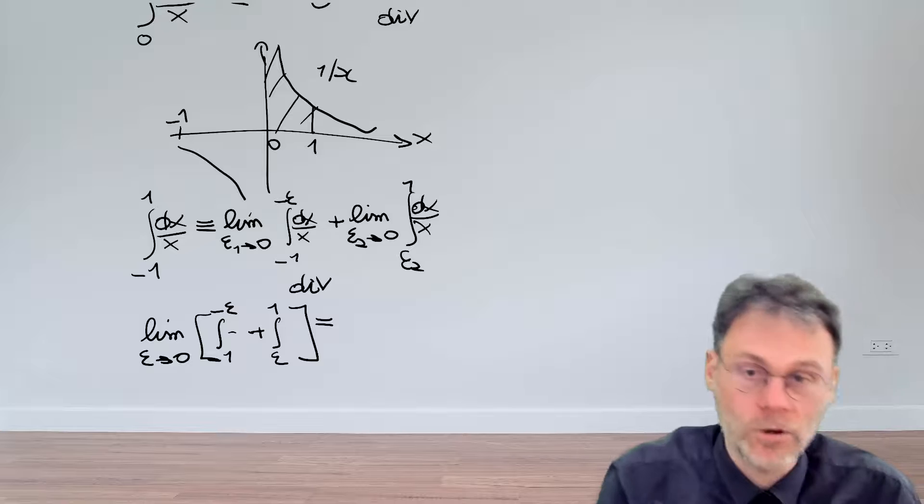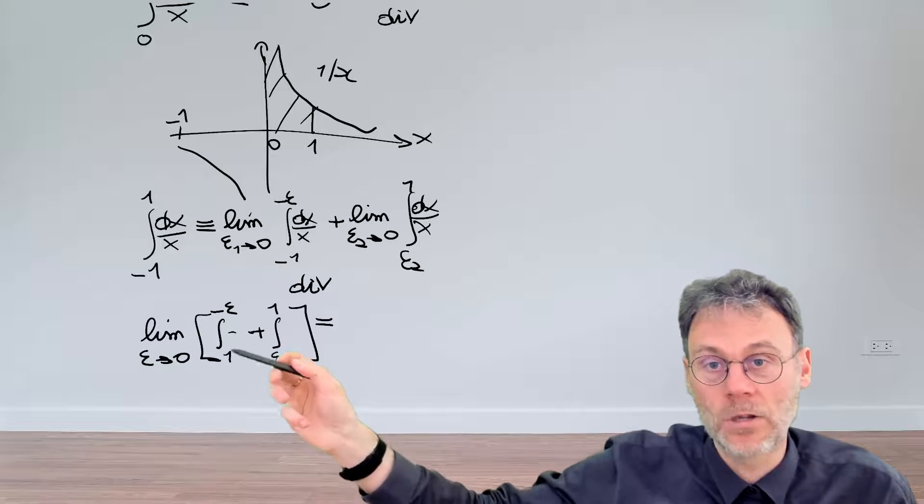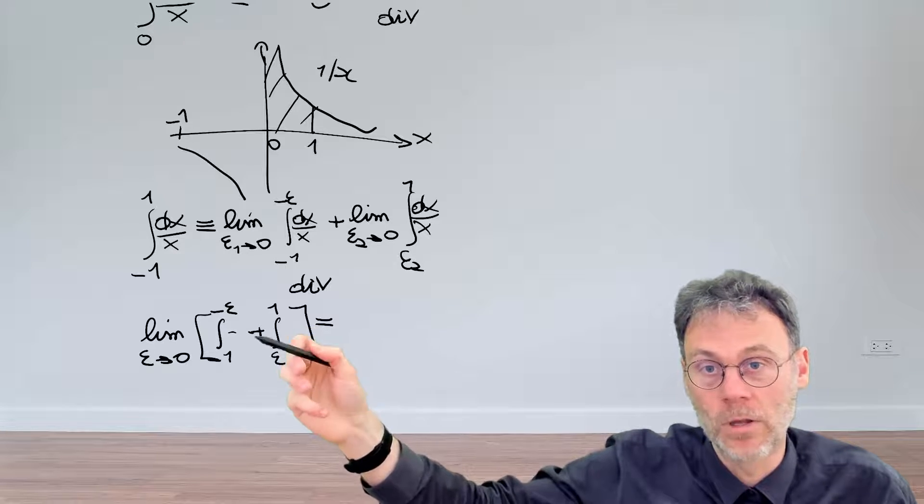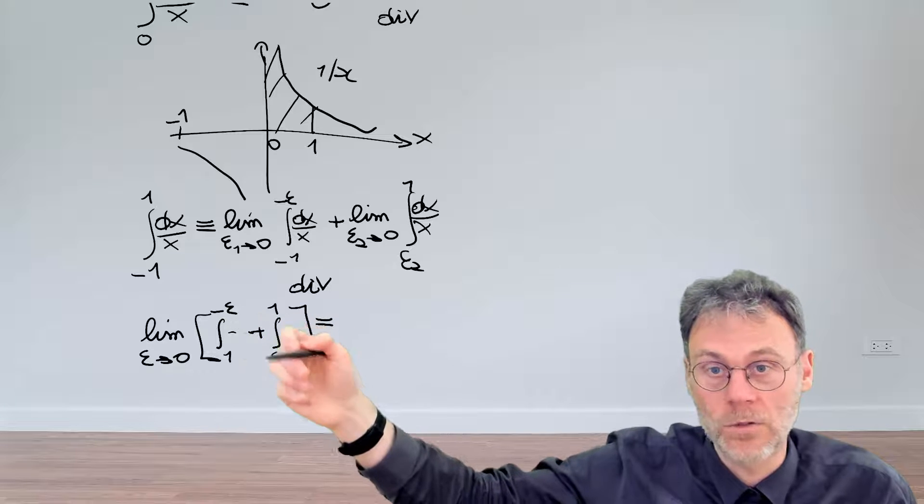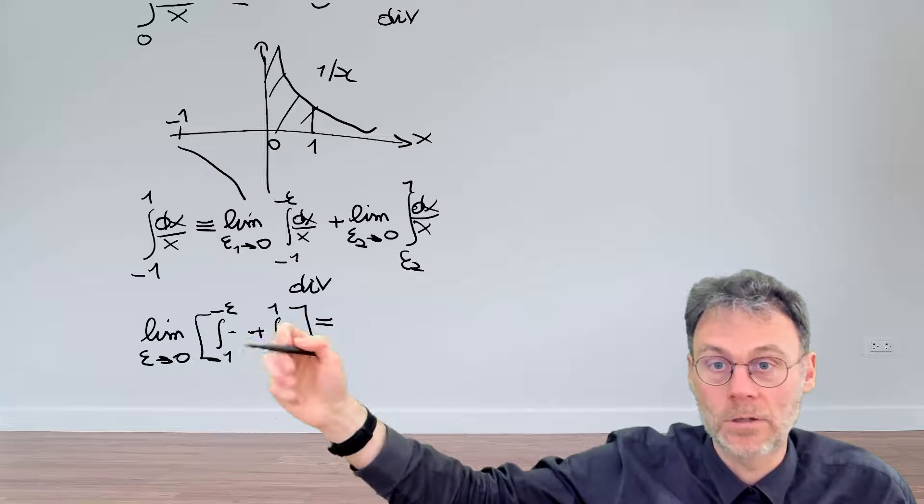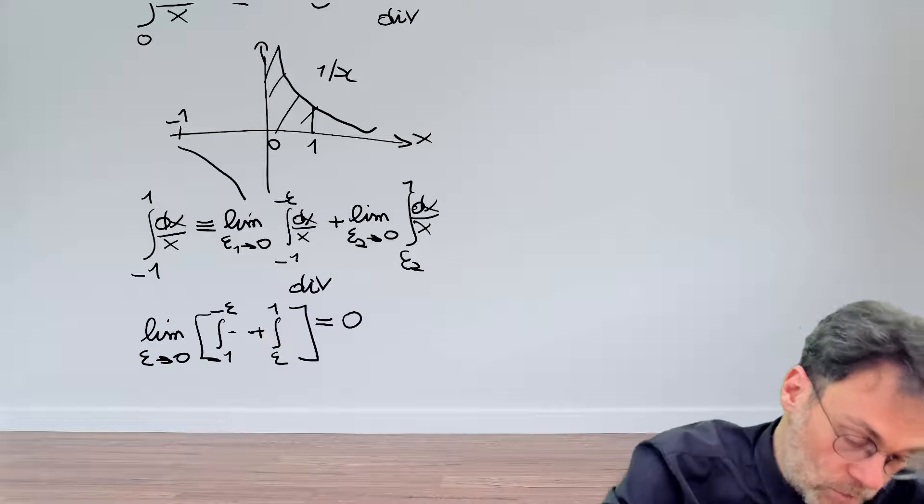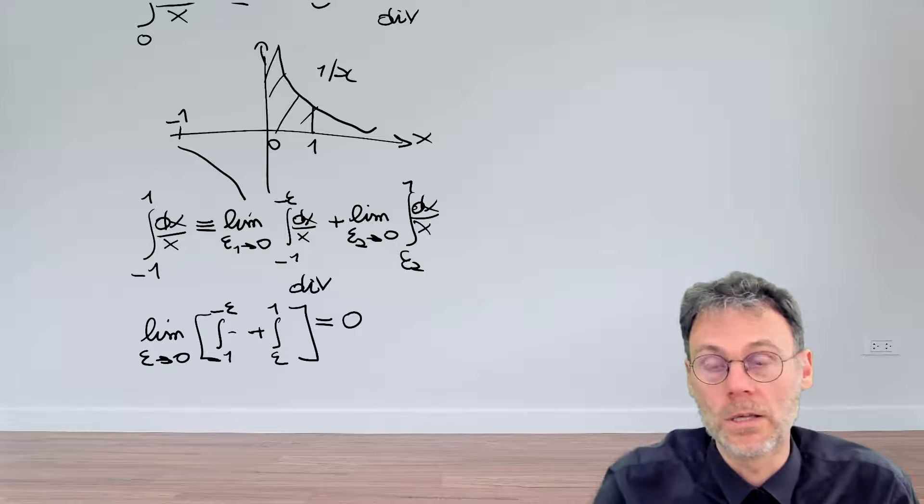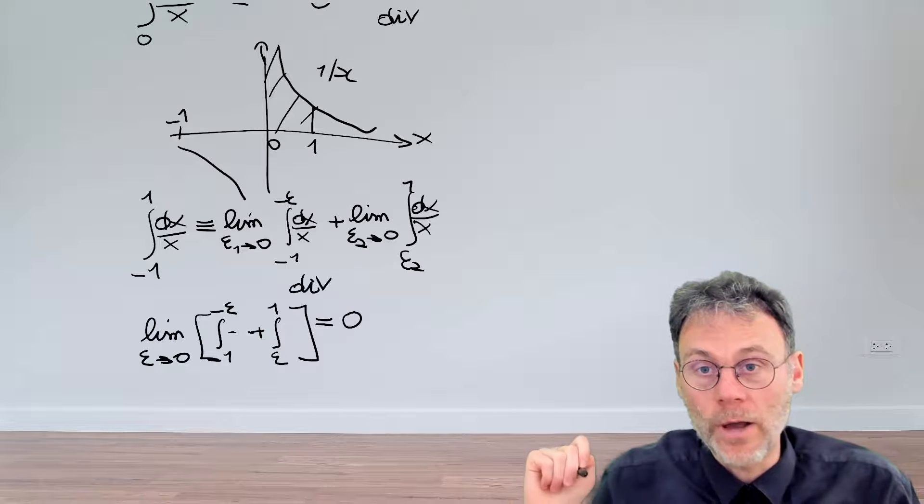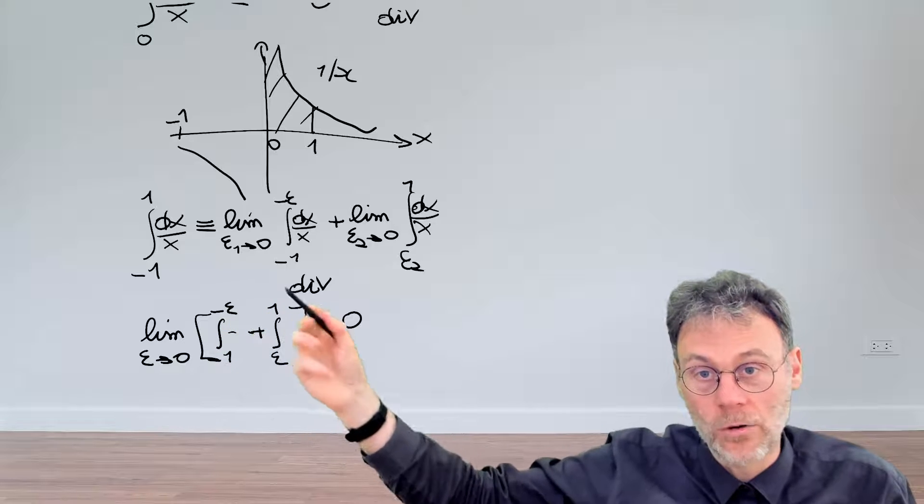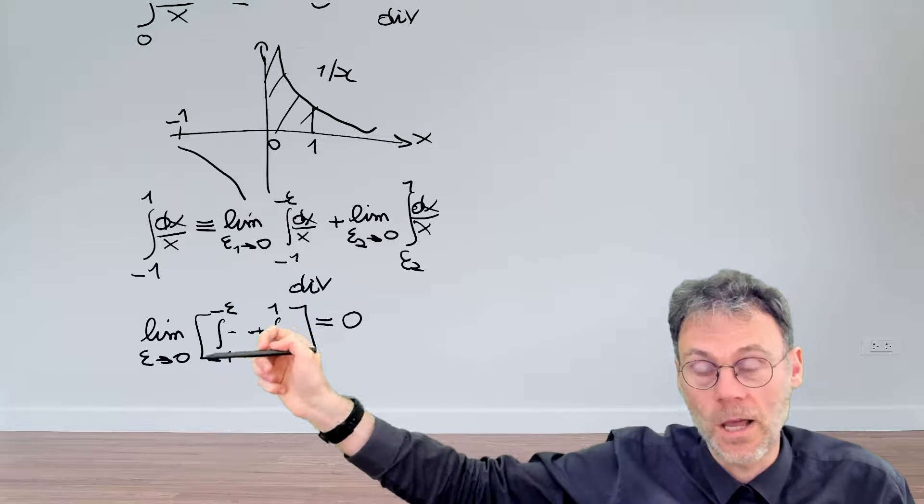Now in this particular case, whatever the value of epsilon is, this term will be minus that term, so this will always be equal to 0. And then if you take the limit of epsilon going towards 0, this thing will also be 0. So how can we write down a shortcut for this particular limiting operation with only a single epsilon?